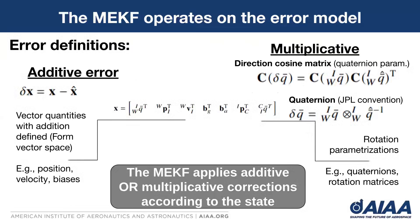The MEKF operates on the error model, and we use the error definitions as follows. For an additive error, we use the model shown on the left — the error is defined as the difference between the truth x and our estimate x hat. We also use the multiplicative definition of error. In this case, what we look for is a multiplicative correction to our current estimate. We can write the multiplicative error using direction cosine matrices C, or we can directly express our error using quaternions. The MEKF applies an additive or multiplicative correction depending on what type of state we're working on.